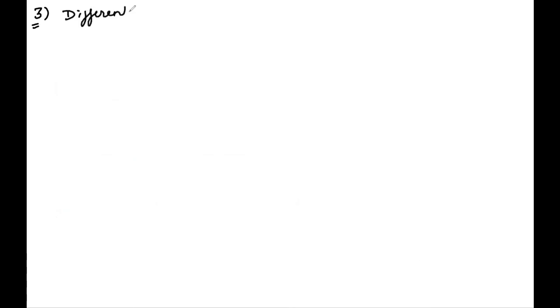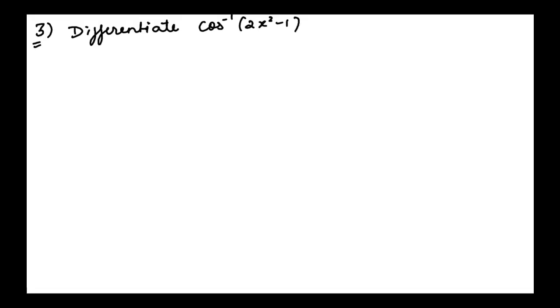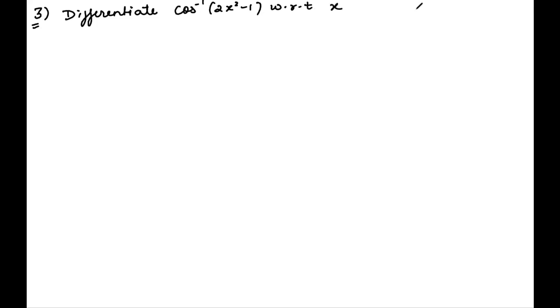So cos is a special case: because cos(−x) = cos(x), we can directly flip the sign of the angle without introducing a negative sign, unlike sin and tan. This makes the cos interval problems slightly different. Today we have learned: direct differentiation of inverse trig functions, substitution-based simplification, and how to handle interval-based questions where the angle may fall outside the principal value branch.